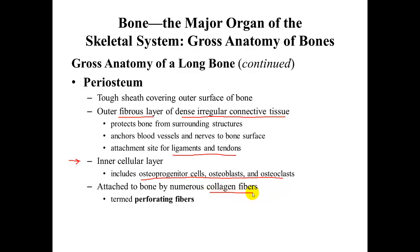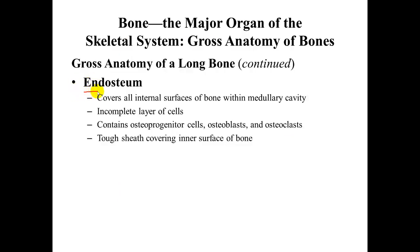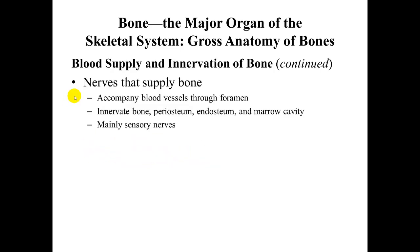Here's a close-up view of the periosteum showing the fibrous layer that is there for support, the cellular layer which contains the osteoprogenitor cells, osteoblasts, osteoclasts, and osteocytes, and the perforating fibers that link the periosteum to the underlying bone tissue. The endosteum is the inner covering in the medullary cavity — an incomplete layer of cells with all the same cell types, and a tough sheath for support. Blood supply flows through the nutrient foramen, a small opening in the outer covering of the bone, where arteries enter and veins exit.